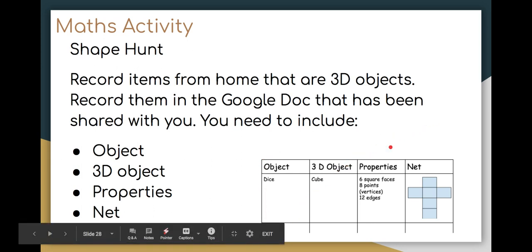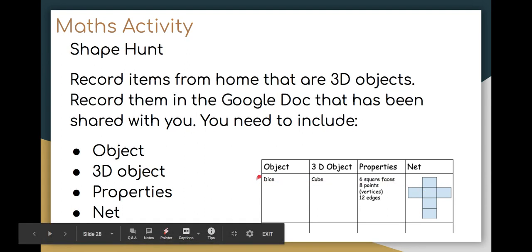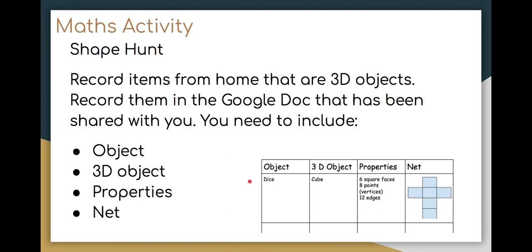Just explaining this table — you need to rule up this table with a ruler and you'll need to actually draw the nets for any 3D objects that you find within your house. Mr. Harris has given you one example: dice. I wonder if you go into your pantry, your bedroom, or out into the garden what 3D objects you might find.